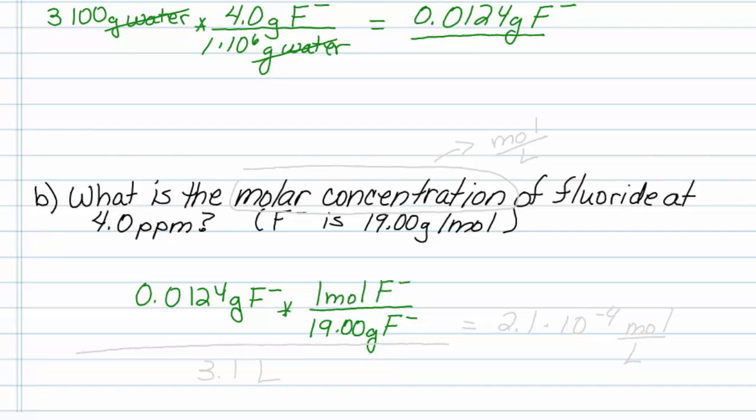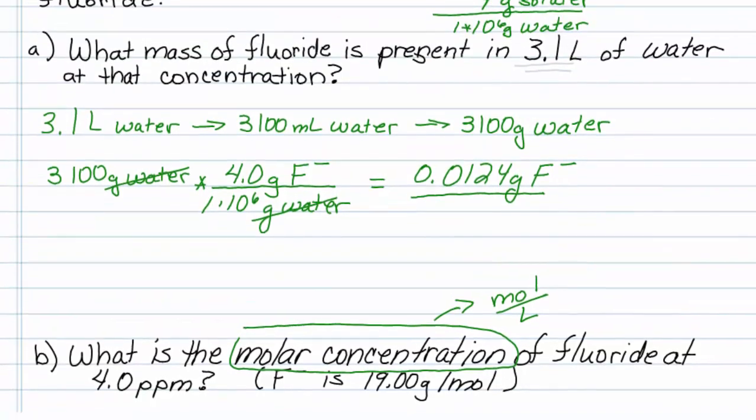That will give me moles of fluoride. And what exactly is molar concentration? If you remember properly, it's moles per liter. So I've got my moles on top. I just need to divide it by liters, and how many liters did I have?